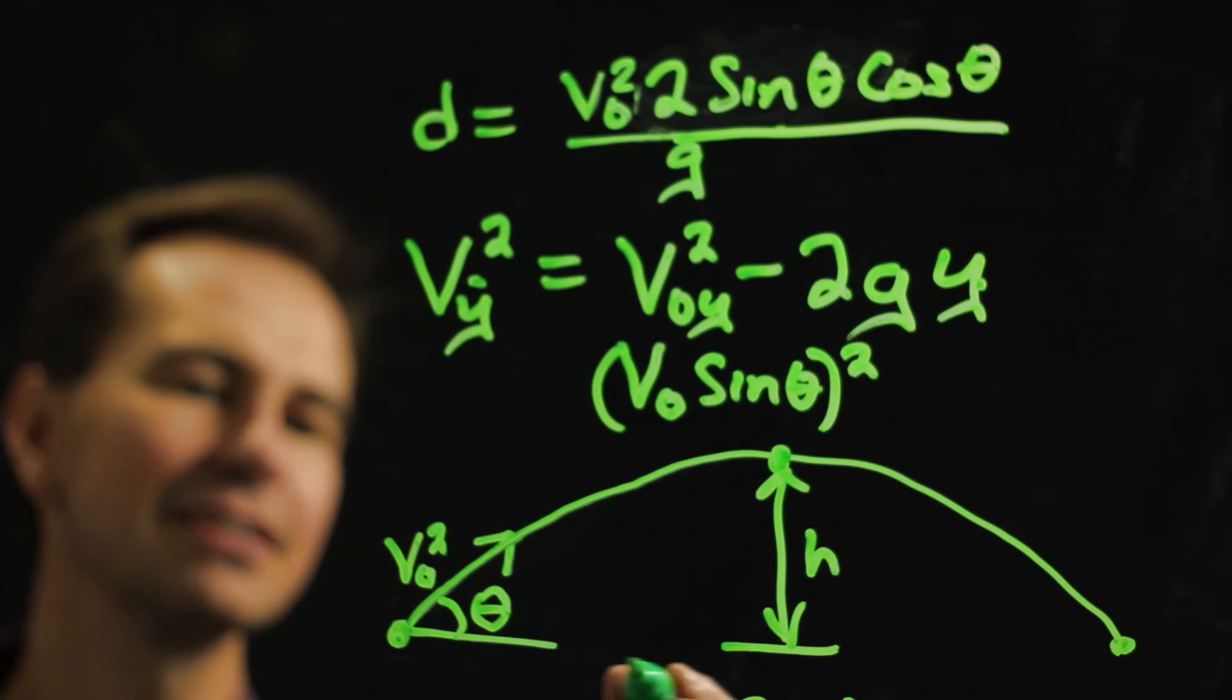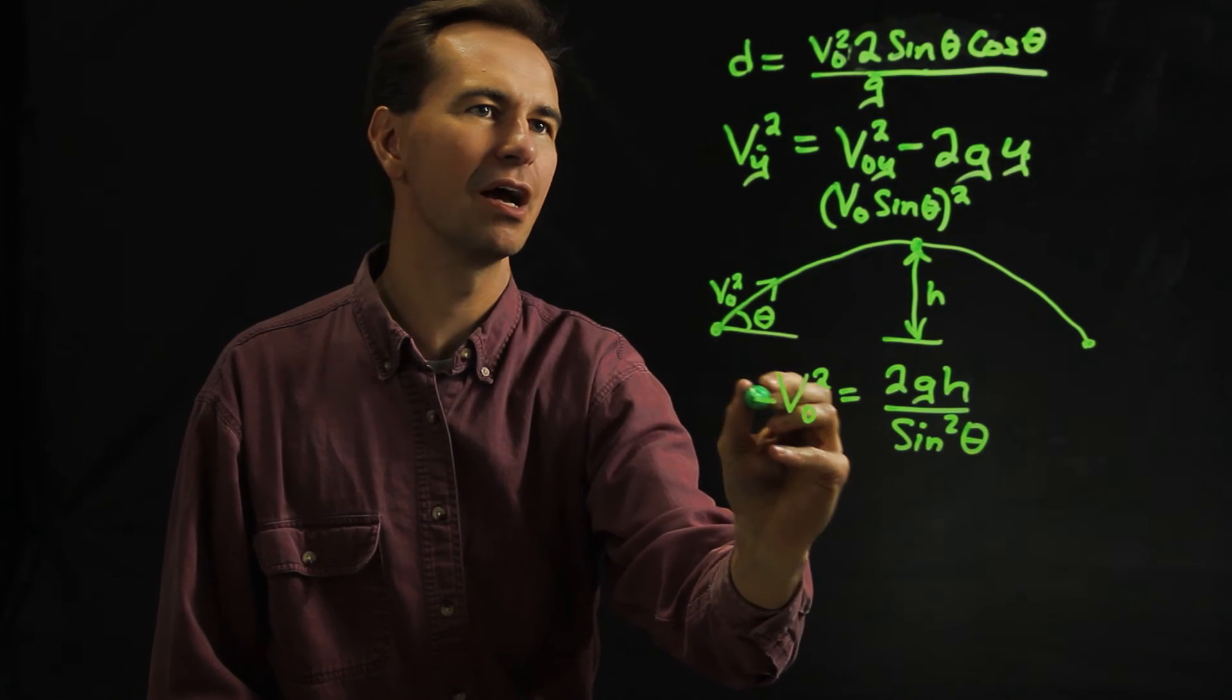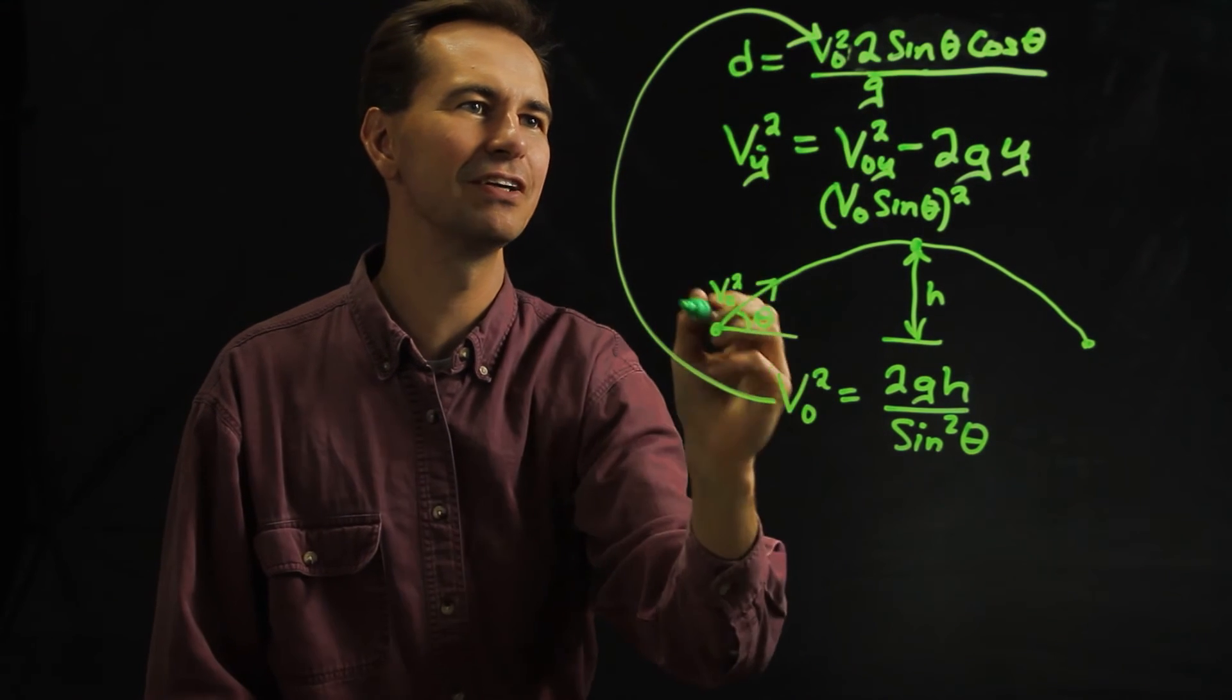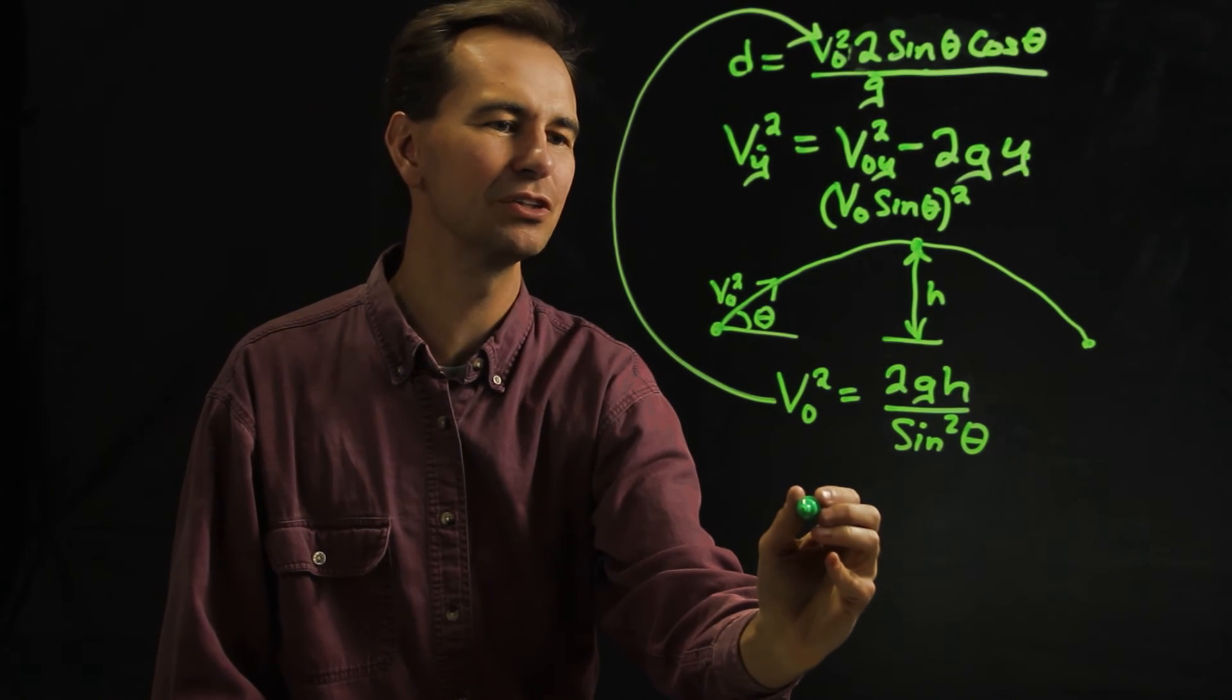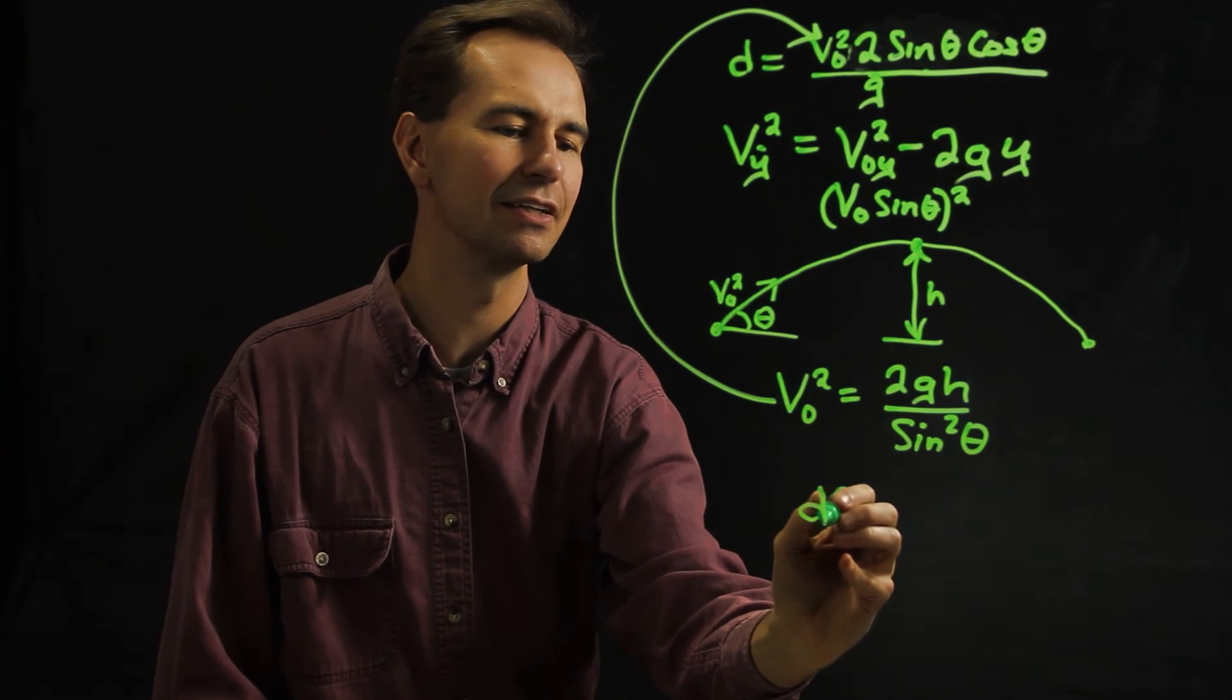And we can take this equation for v naught squared and plug it in right there for that v naught squared, multiply everything out, and when we do we get something that looks like this.